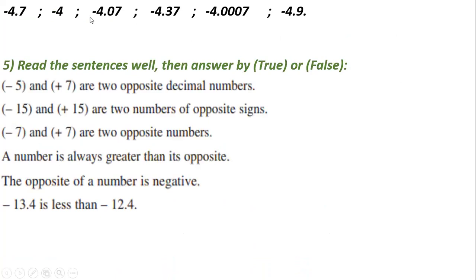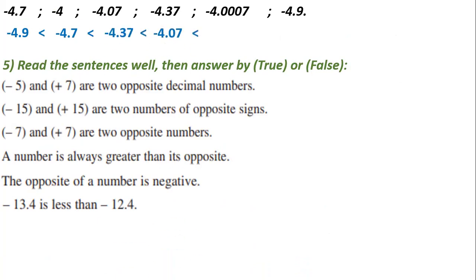For the negative numbers set — most of you did this wrong — in the negative side, as you go further from zero the number becomes smaller. Which is furthest from zero? It is minus 4.9. Then minus 4.7, then minus 4.37, then minus 4.07, then minus 4.0007, and finally minus 4.